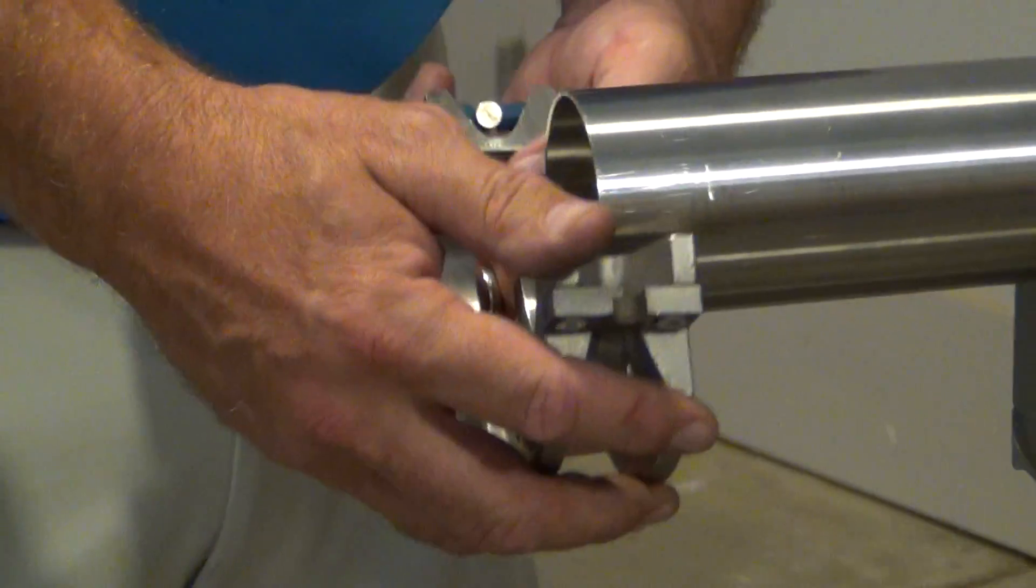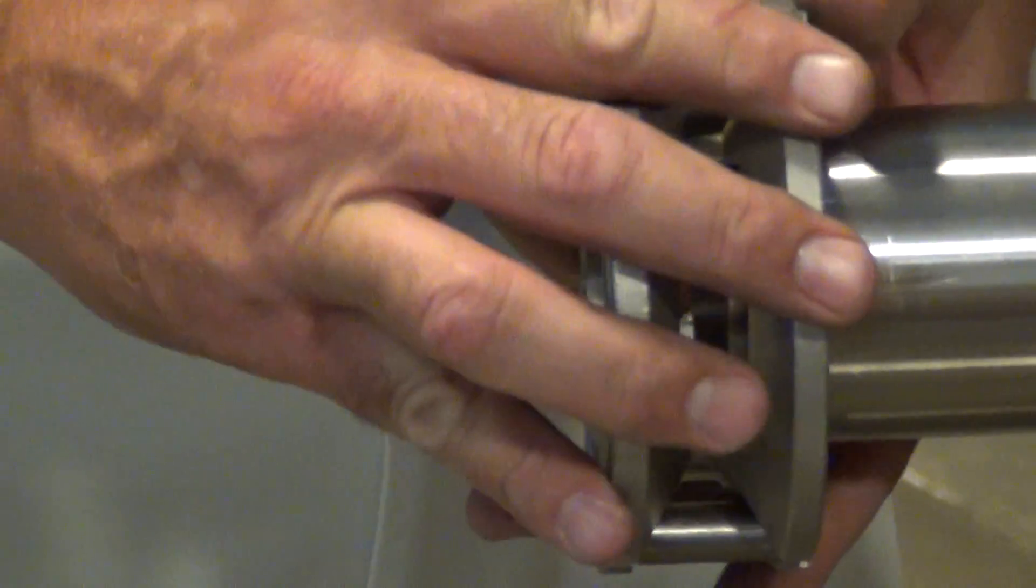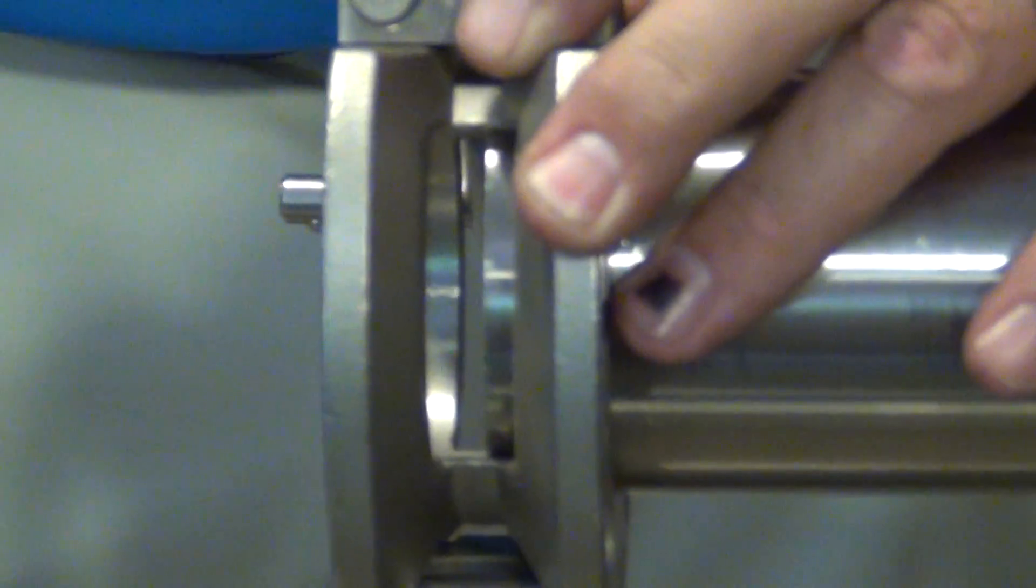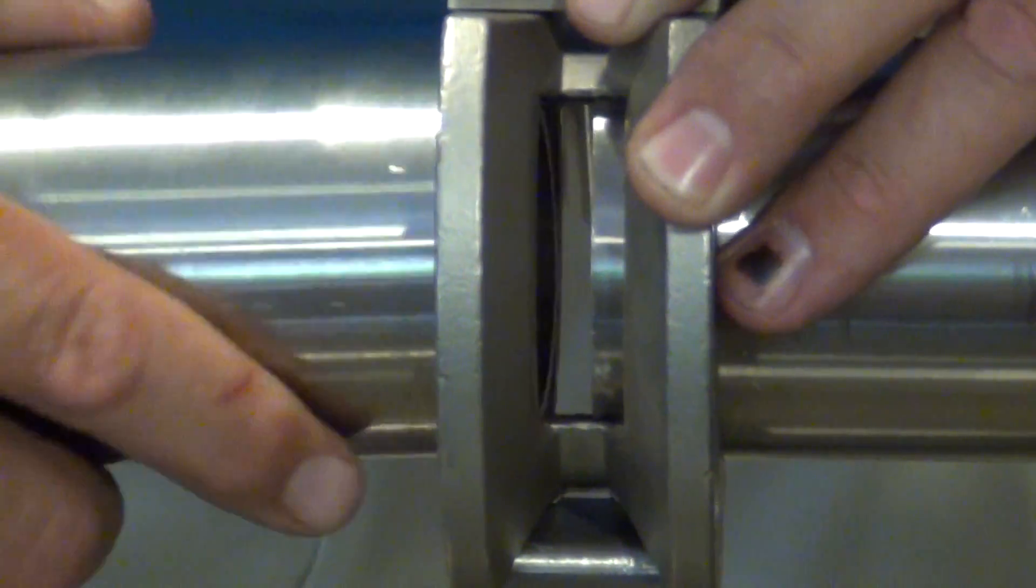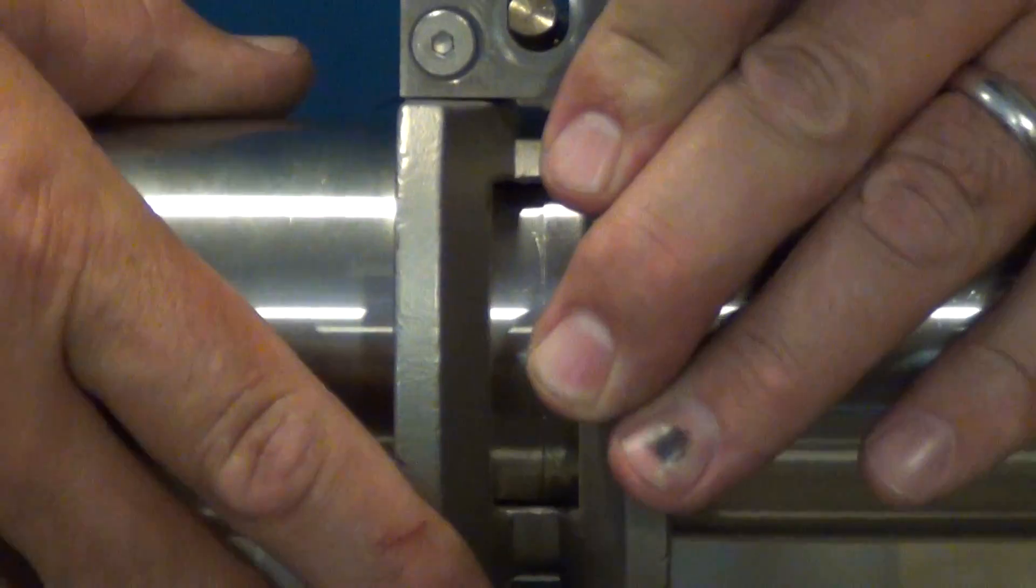So let me show you how it works. You're going to take your ring and you're going to kind of split the windows. You're going to put one side in there and your other side in here.